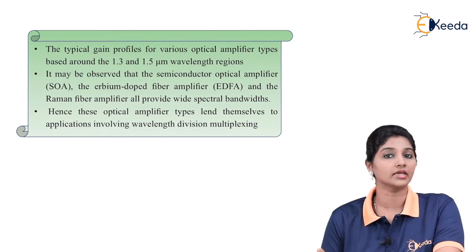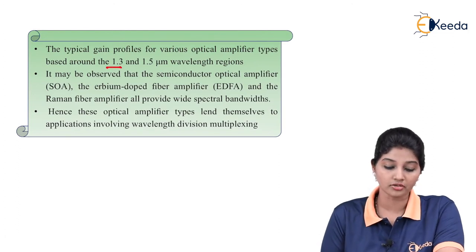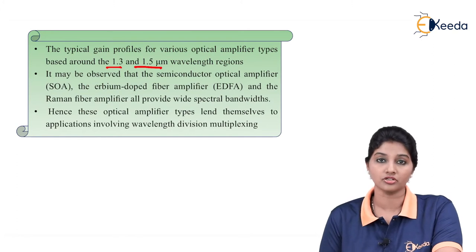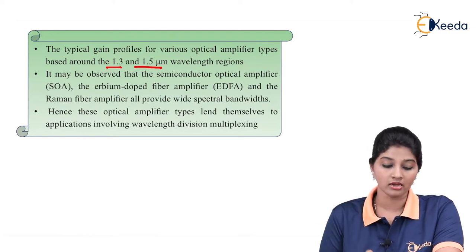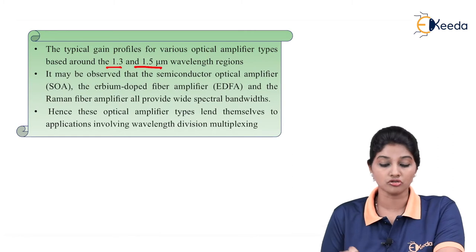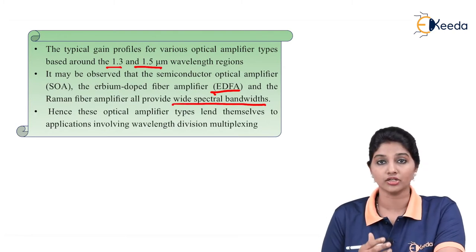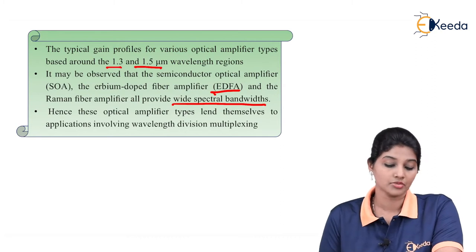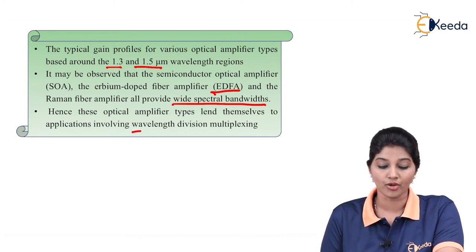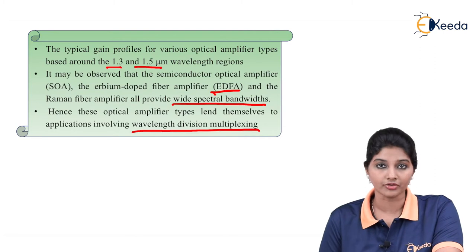Now let's move towards the gain provided by the optical amplifier. The typical gain provided by an optical amplifier is in the range of the 1.3 to 1.5 micrometer wavelength region. It may be observed that the semiconductor optical amplifier — also called SOA — the Erbium doped fiber amplifier — also called EDFA — and the Raman fiber amplifier all provide a wide spectral bandwidth. Because of this, we can use these types of amplifiers in a variety of applications, and they lend themselves particularly to applications involving wavelength division multiplexing.